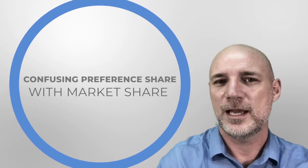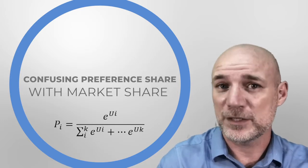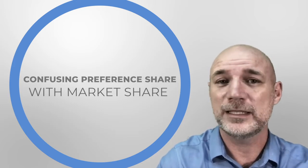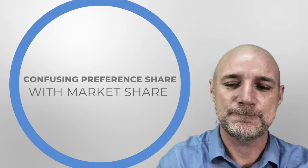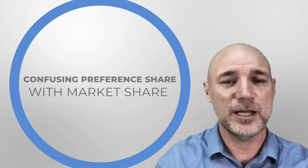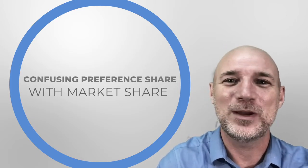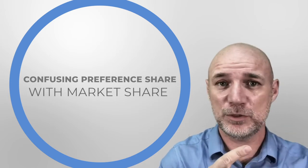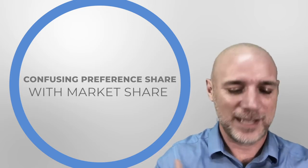Mistake number three is the following. When you get your results, the values or utilities get translated using a statistical formula into preference shares. Every respondent gets a preference share based on a probabilistic model — it's the probability of that respondent picking that configuration of a product. A lot of times people end up calling it a market share. The problem is: when you were doing the choice task, respondents had 100% awareness, 100% distribution, and accessibility for the product — it was right in front of them, and the assumption was made that it's accessible to them.